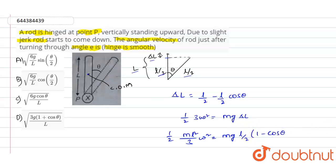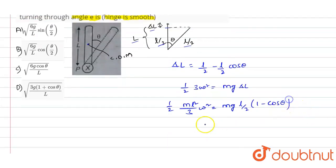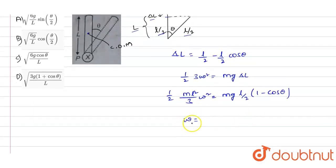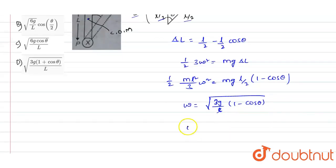So we can simplify this and find the angular velocity. The angular velocity omega value will be equals to under root of 3g/L × (1 - cos θ).